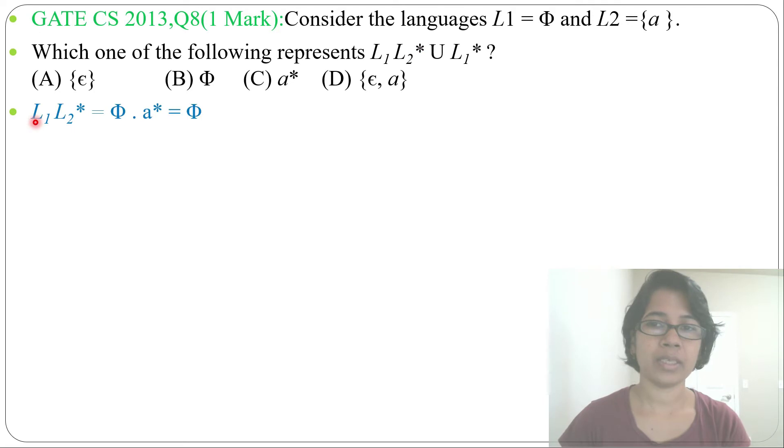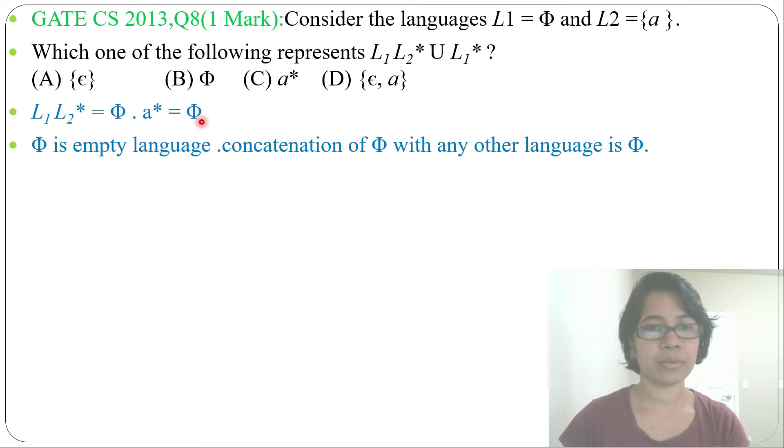So L1 is Phi, L2 is A, so L2 closure will be A closure. Then Phi concatenation A closure, that will be Phi. Phi is empty language and concatenation of Phi with any language will be also Phi. So L1 concatenation L2 closure, that is Phi.